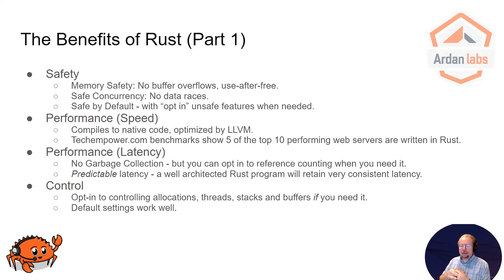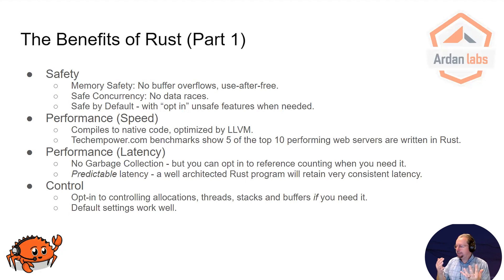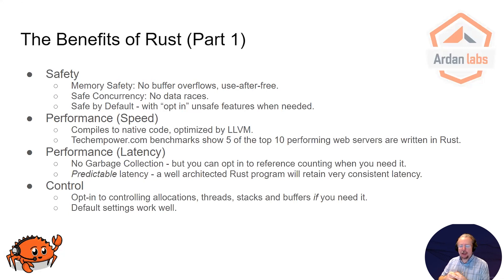The second reason to go with Rust is speed. It compiles to native code and uses the LLVM compiler chain — originally from Apple, but now open source. The optimization levels it applies are really quite extreme. It's a very fast language by default, and in this presentation I haven't done deep optimizations, haven't manually managed memory or manually marshaled threads, and even so it's extremely high performance. On techempower.com, benchmarks for web servers with normal practical workloads, five of the top ten web servers are written in Rust.